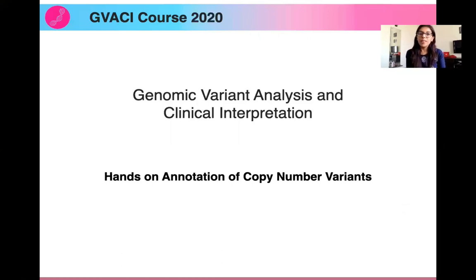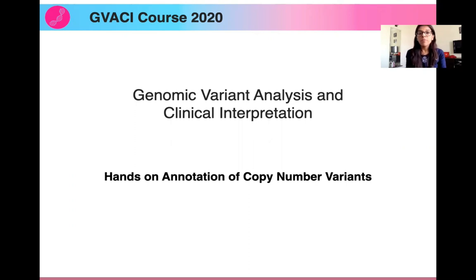Hello everyone and welcome back to another session of the Genomic Variant Analysis and Clinical Interpretation course. Today we'll be looking at one example copy number variant and we'll try to annotate it using the guidelines that we've already studied in the previous session, which are used to annotate copy number variants and are given by ACMG, AMP, and in joint consensus with the ClinGen resource.